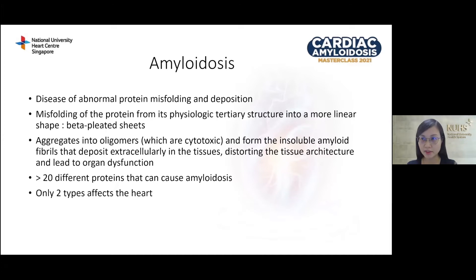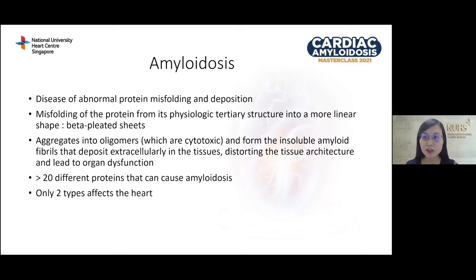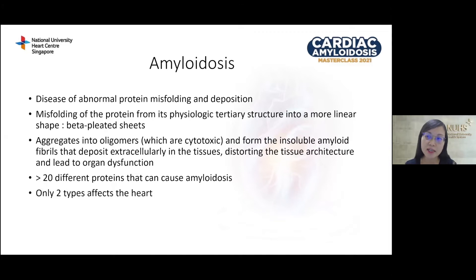Cardiac amyloidosis, once thought to be a rare disease, has been increasingly diagnosed due to increased awareness and new imaging modalities. Amyloidosis is a disease of abnormal protein misfolding and deposition. In amyloidosis, there is misfolding of the protein from its normal physiological structure into a more linear shape, also known as beta-pleated sheets. Instead of being soluble, the misfolded protein accumulates to form insoluble fibrils, which deposit in the extracellular spaces, distorting tissue architecture and leading to organ dysfunction.